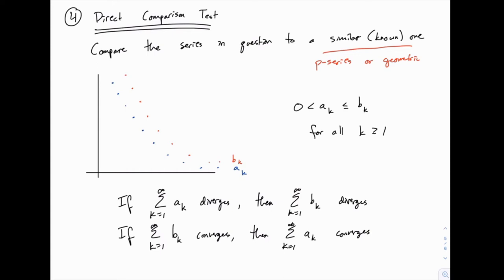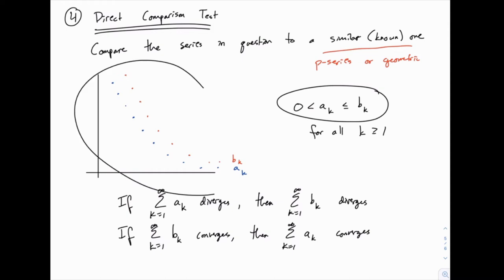I've drawn a picture here, and we're visualizing two series. One of them is the one we're looking for the answer to, and the other is one that we can compare it to — one that we already know the answer for. For this to work, a specific pattern has to emerge: one of them has to always be larger than the other. I'm calling the lower one a sub k and the upper one b sub k, so b is always larger than a for all values of k greater than or equal to 1, and both have to be positive.